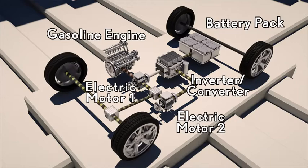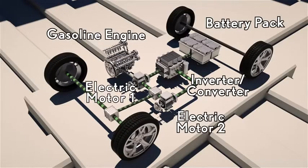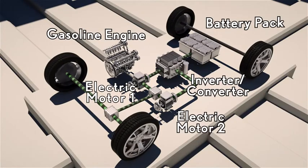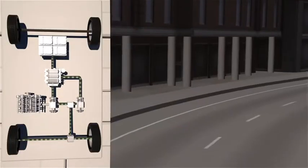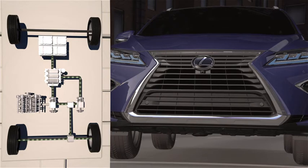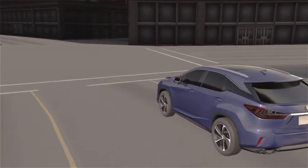When the driver takes their foot off the accelerator, MG1 and MG2 switch from motors to generators, capturing the momentum of the coasting vehicle and spinning the generators. When they function as generators, they're harder to turn, so they help slow the vehicle at the same time. This regenerative braking helps recapture energy that can later be used to power the vehicle.